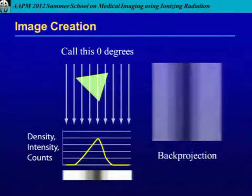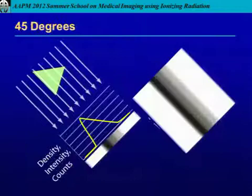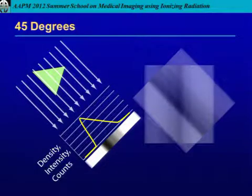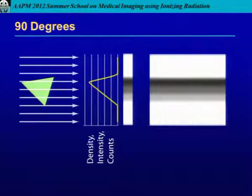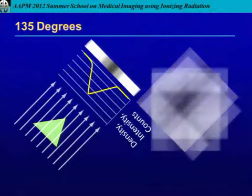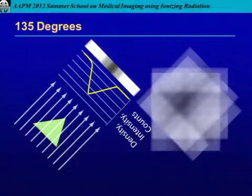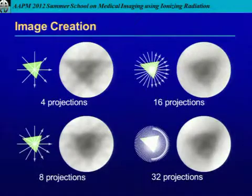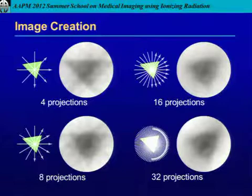Let's try a different angle. We keep the first projection in mind, move to a slightly different angle, get a different pattern, do the same back projection, and keep adding angles. After three projections, then four, you can already see some kind of triangle forming. If we add a few more projections, something starts to emerge that resembles the original object.